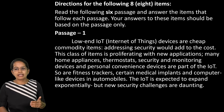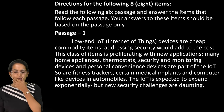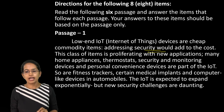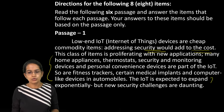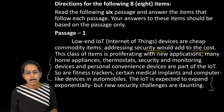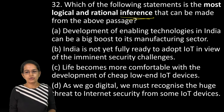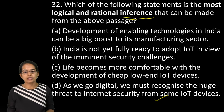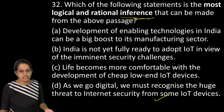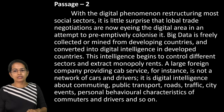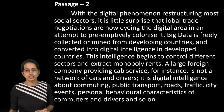The first passage talks about Internet of Things (IoT). These are cheap commodity devices, but security concerns are important and add to the cost. Usage has expanded but security challenges remain. The most logical inference that could be drawn is: as we go digital, we must recognize the huge threat to internet security from some IoT devices. Option D is the right answer.